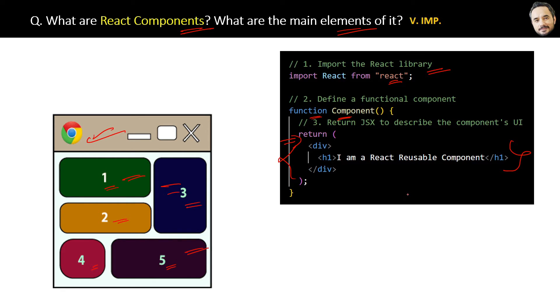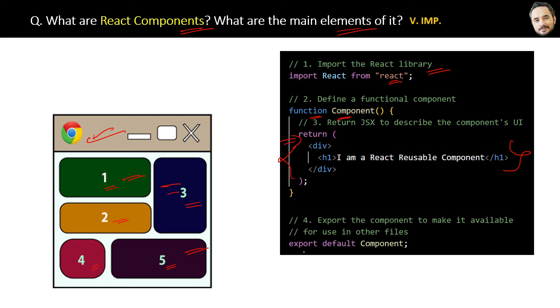This export keyword is used so that the component will be available inside other files or components. Definitely, later we will cover more questions on components, but this is a very high-level basic idea of a component structure.